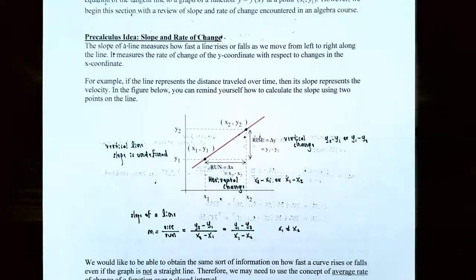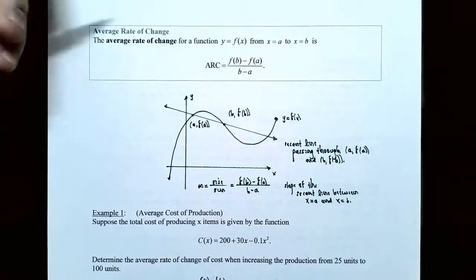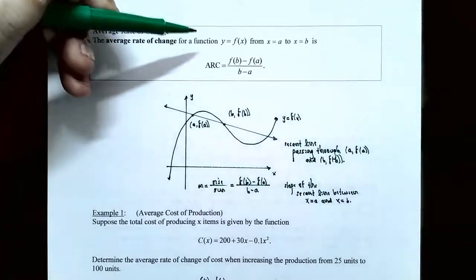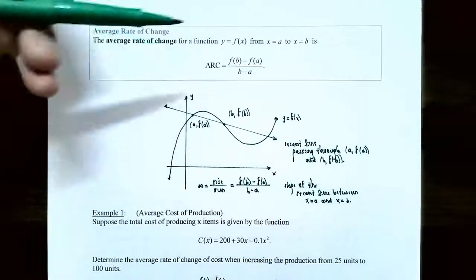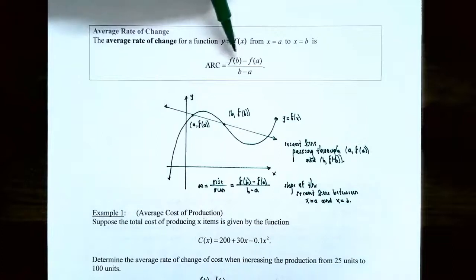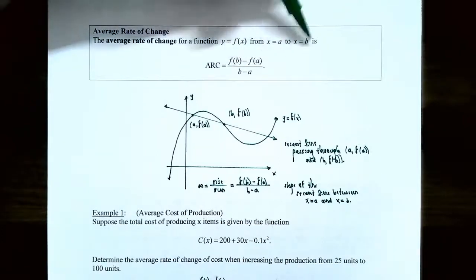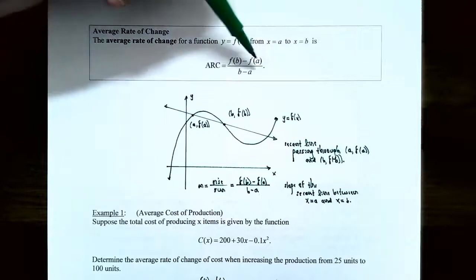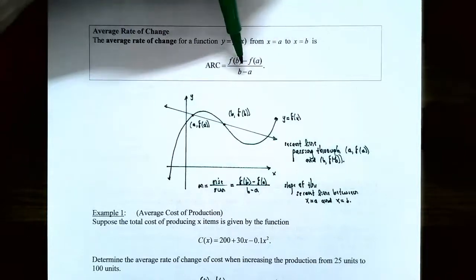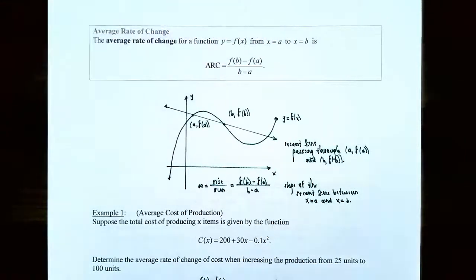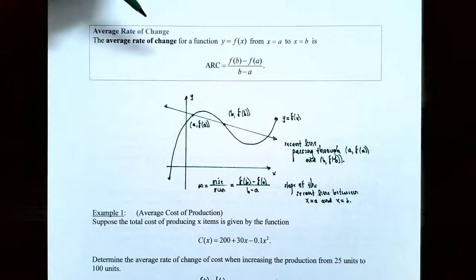We're going to talk about the average rate of change for a function over a closed interval. The average rate of change for a function y equals f of x on a closed interval x equals a to x equals b is given by the slope formula: ARC equals f of b subtract f of a divided by b minus a. The numerator is f(b) minus f(a) — the y values — and the denominator is b minus a — the x values. This calculates the slope between two points on a curve, which is called average rate of change.